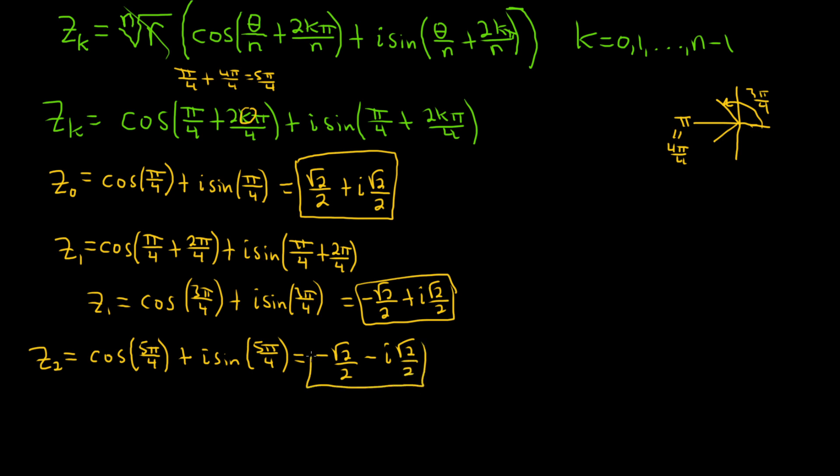So that's another root of negative 1. And the last one would be z sub 3. And again, let's do some pre-thinking. If you have pi over 4 and you plug in 3 here, you're going to get plus 6 pi over 4 because 2 times 3 is 6. So you're going to get 7 pi over 4.